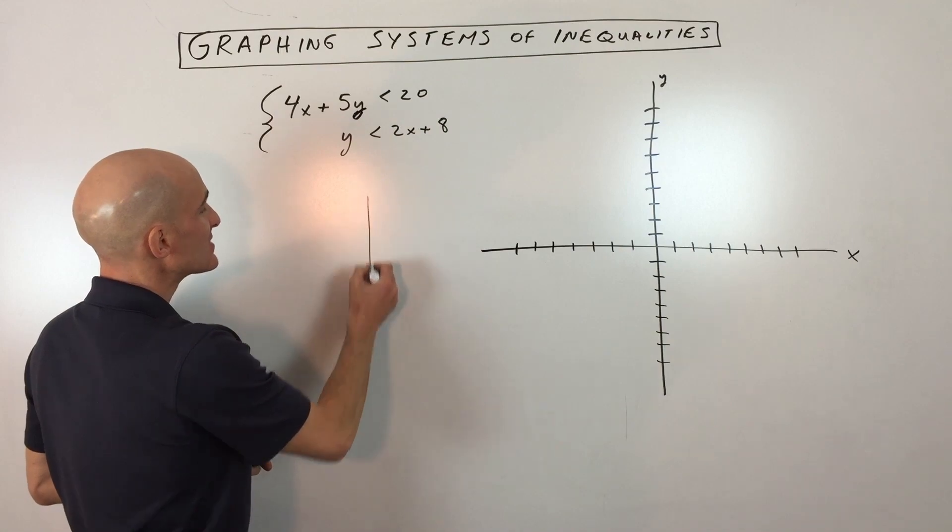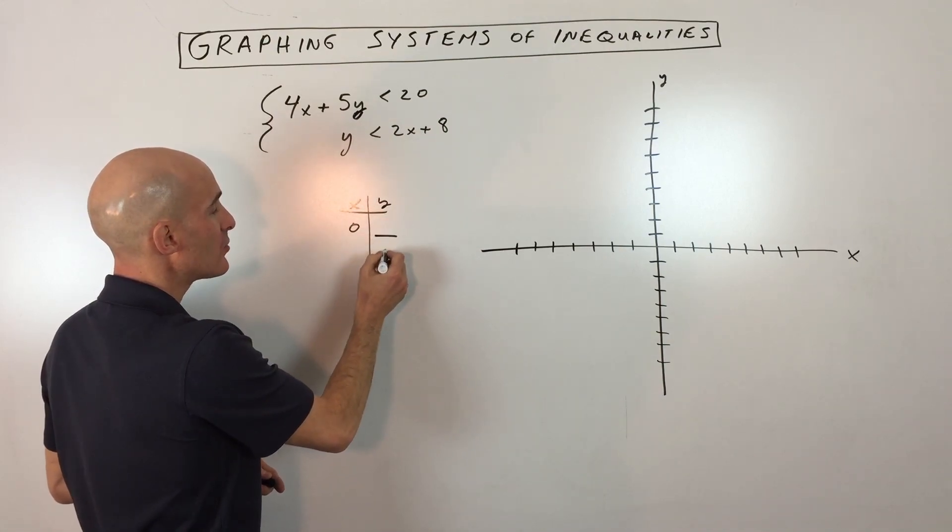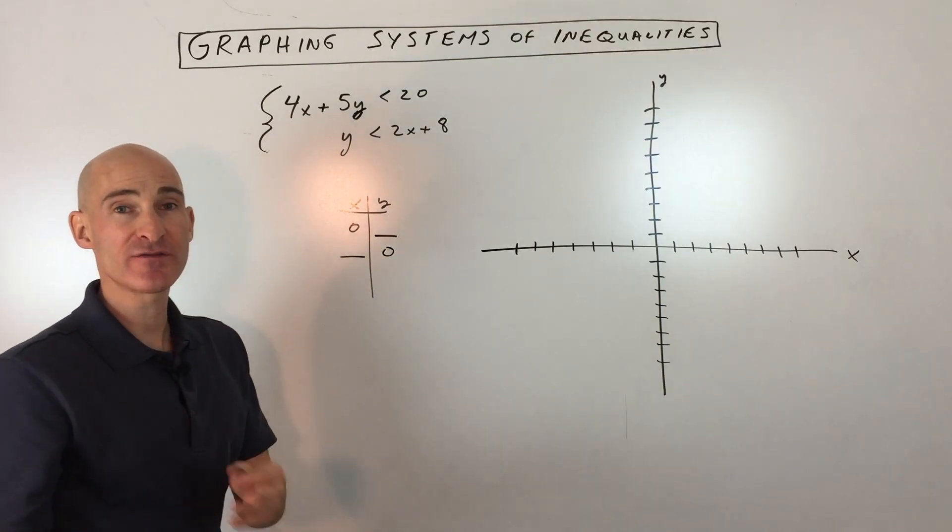What I would do in this case is I would make a little table here where I set x to zero and then I set y to zero. So that allows us to find the intercepts.